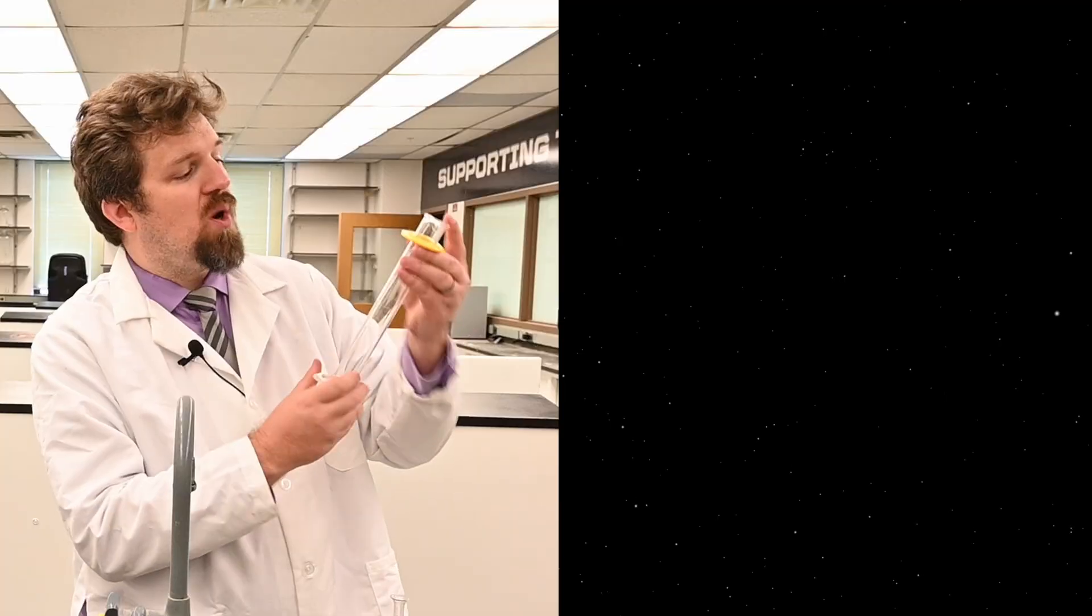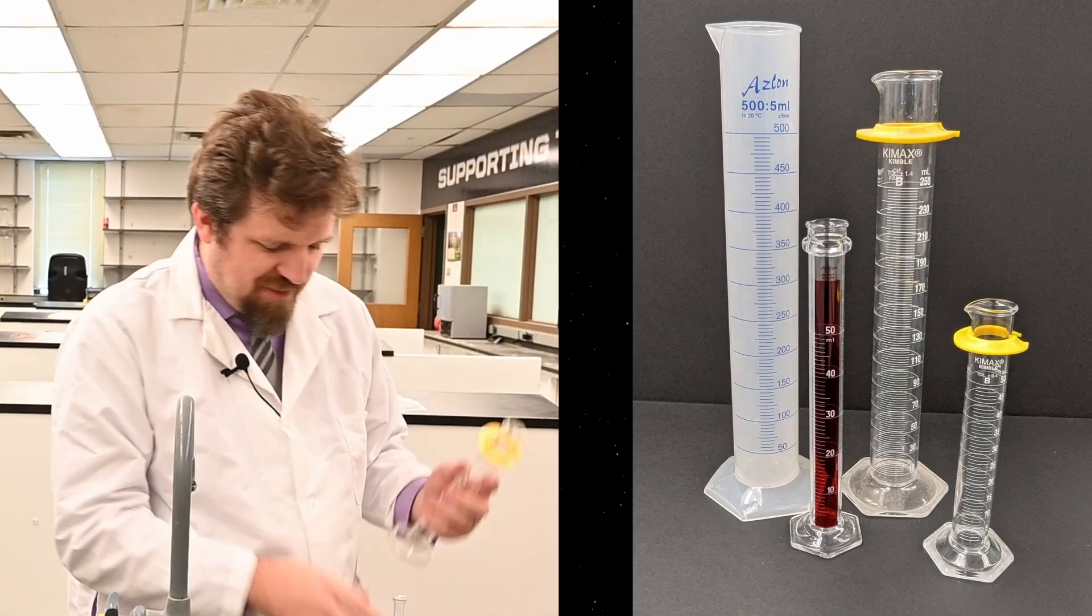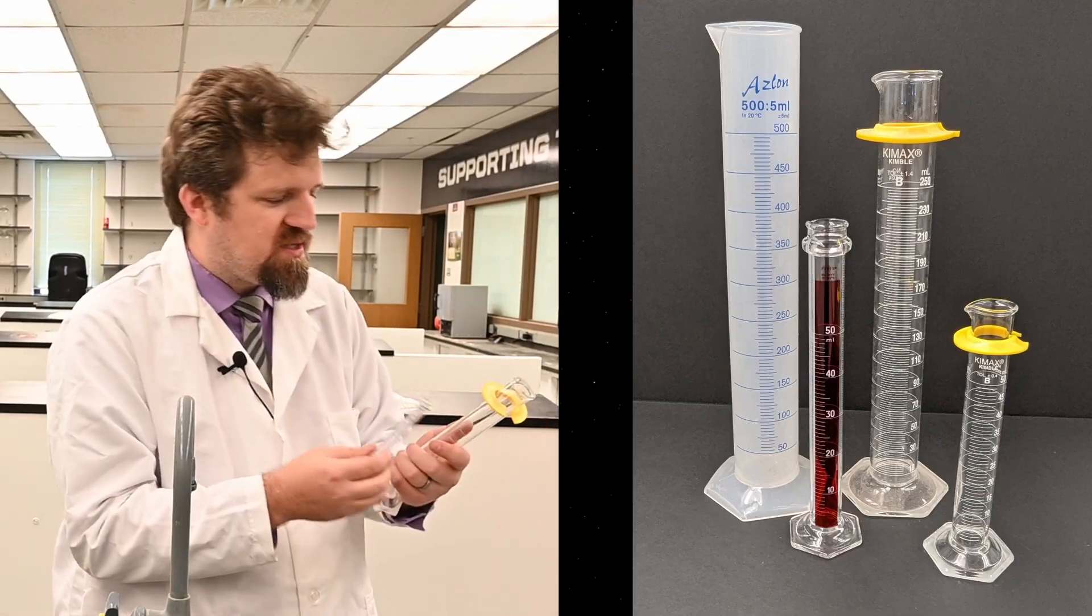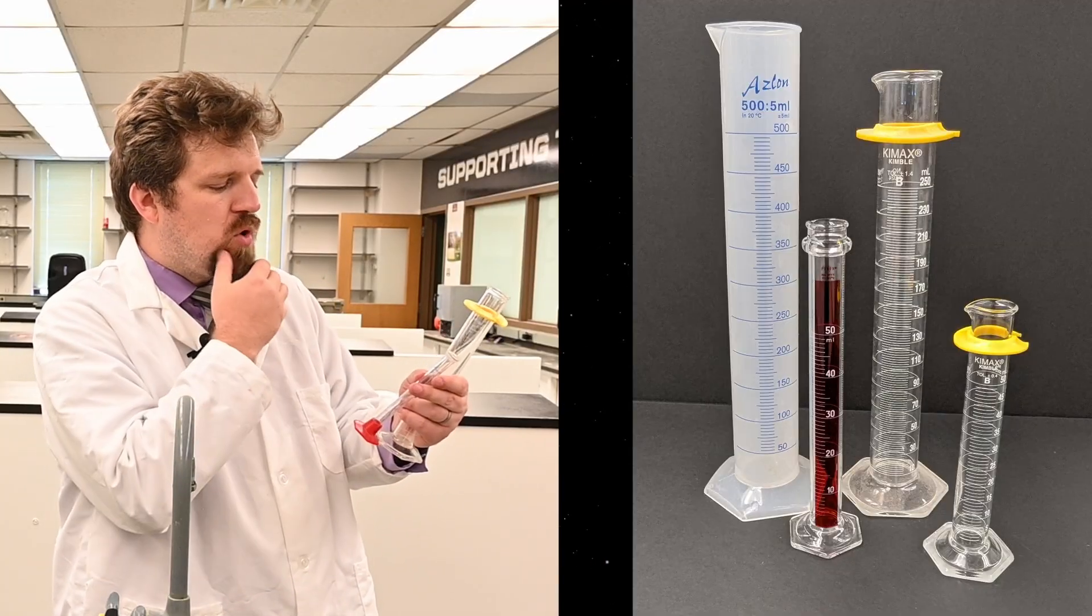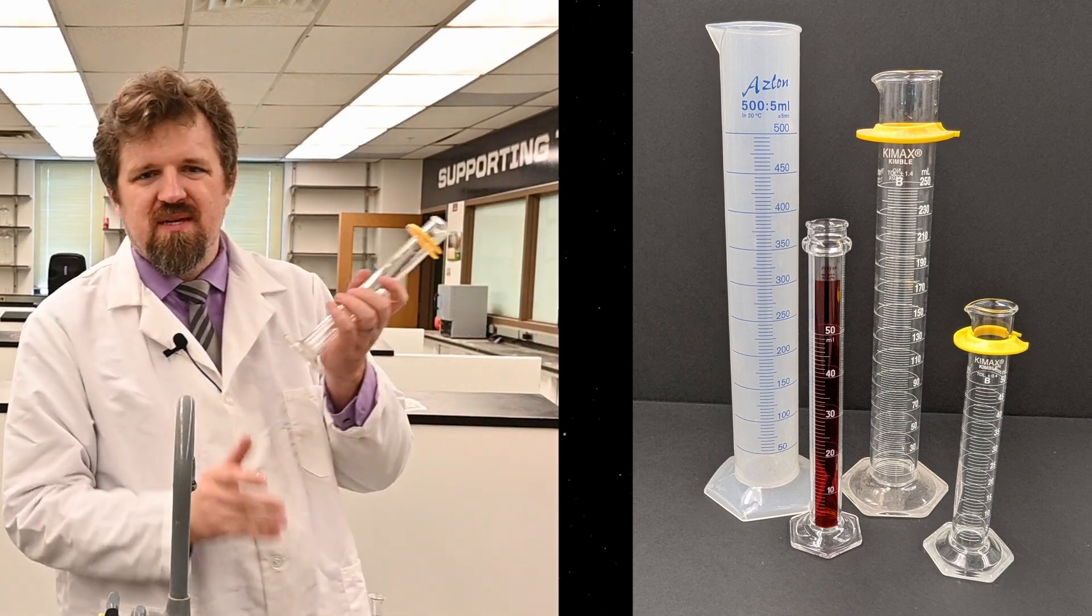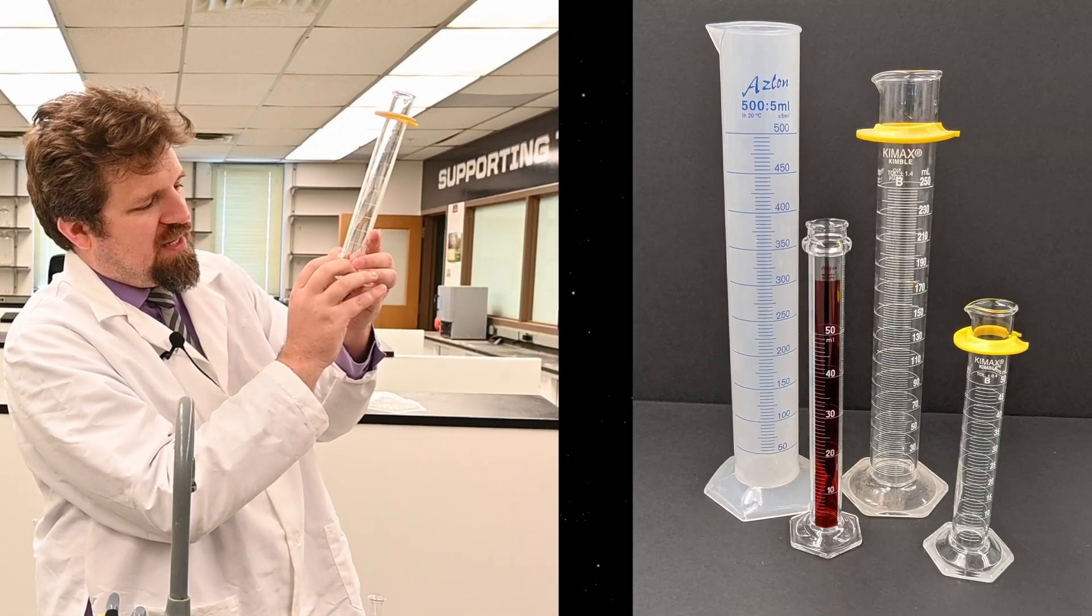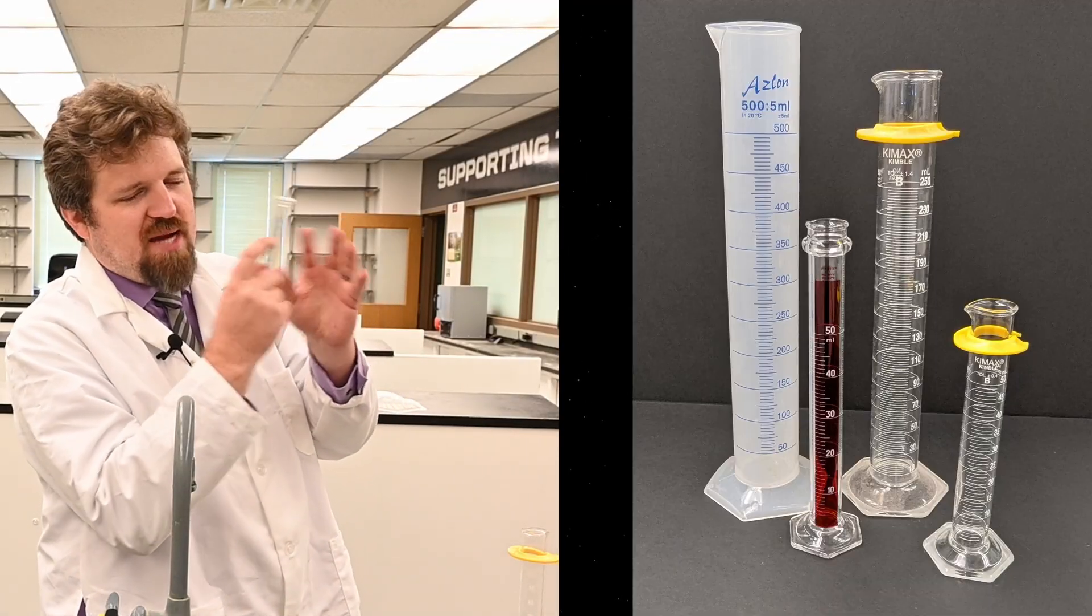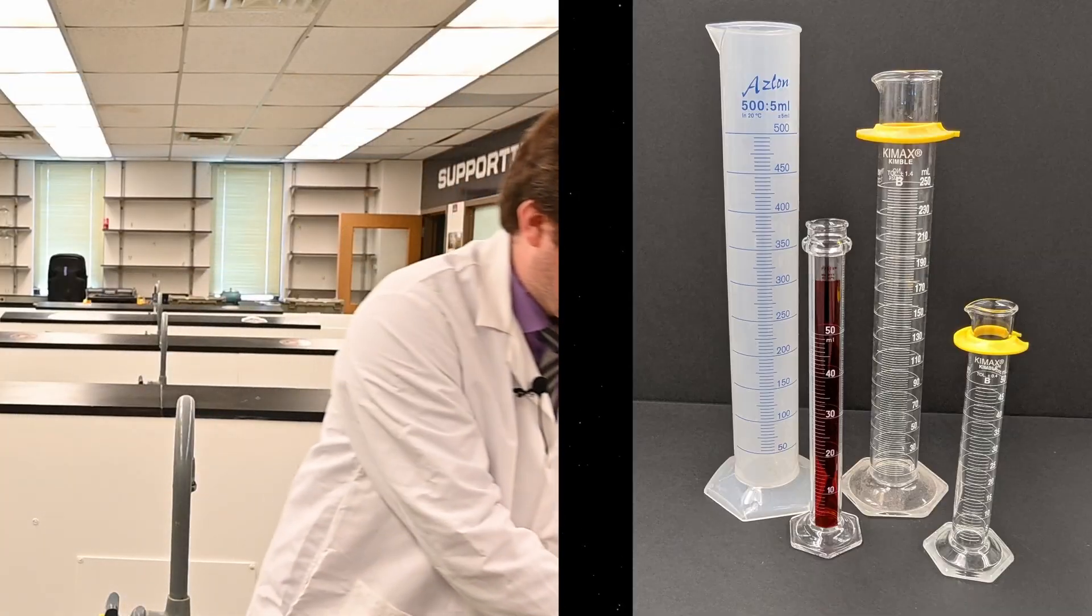This one is a 100 mil graduated cylinder. It does the same thing, they both measure the same thing, so you think, when do you use what? Well, obviously, it's the volume you're using. You want to use a piece of equipment that is close to the max of what you're measuring. So if you were measuring 9 mils, you could use this, but why, when you have this available? If you have this available, that 9 right there is going to be far more precise than a 9.